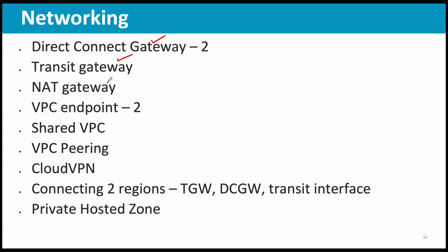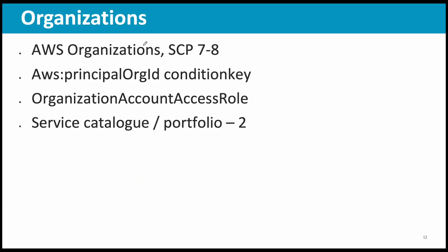Shared VPC, VPC Peering, Cloud VPN, connecting two regions, and private hosted zones were also covered. AWS Organizations had around seven to eight related questions — not direct questions about Organizations itself, but you need to understand AWS Organizations, SCP, multiple accounts, how cross-account roles work, etc., to answer these scenarios. This is very important — ensure that you are thorough with it.